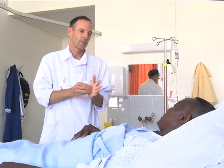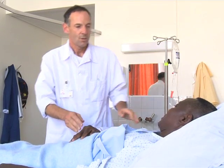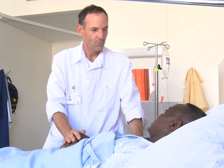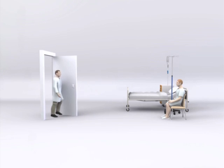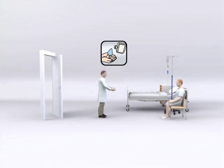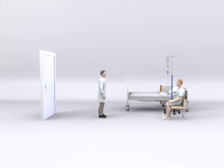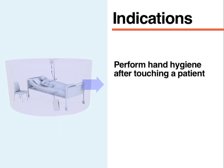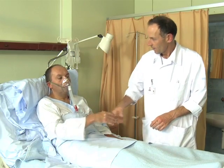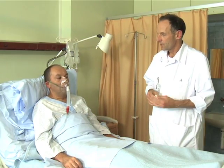The correct moment to perform hand hygiene before touching a patient is critical. Hand hygiene should be performed close to the site of care in order to avoid recontamination should your hands inadvertently come into contact with an object distant from the patient, the doorknob for example. Perform hand hygiene between the last contact with an object located outside the patient zone and the first contact within the patient zone.